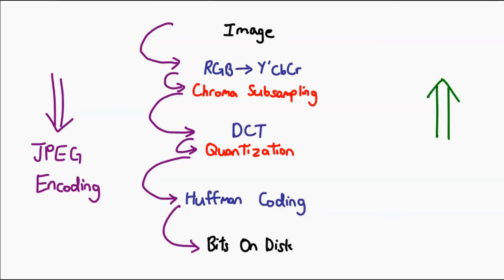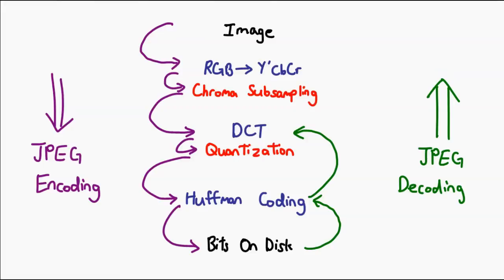And that is the final step — you take the information, run it through Huffman coding, and write it to disk. What you have on disk is a file that is compressed in many ways. When you open a JPEG file, all these steps are reversed — well, not all of them, since some of the steps actually throw away information — but basically you reverse the Huffman coding to get all your DCT information back. This DCT information represents the frequency information of the image. By reversing the DCT process, we get back the channels of the original image in Y'CbCr format. Once we convert this back to RGB, we're good to go, and the image can be displayed normally. And basically, that is how JPEG works.